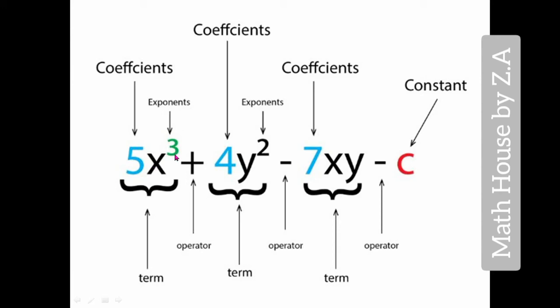5 is a coefficient, x is the variable, and 3 is an exponent. Exponent or power means the number at the top of the variable, the small number you see above. This is called exponent or power - it can be 1, 2, 3, 4, or any power.